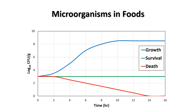If you have ever seen a petri plate that is covered with little dots, those dots are bacterial colonies. Microbiologists will count these colonies and determine how many colony forming units or CFUs are present in a gram of food. Under ideal conditions, bacteria, yeast, and mold can multiply very rapidly. This is depicted by the blue line labeled growth. You can see that within eight hours, the number of microorganisms has increased from 1,000 CFU to 100 million CFU per gram.